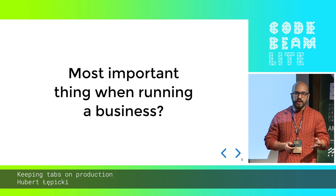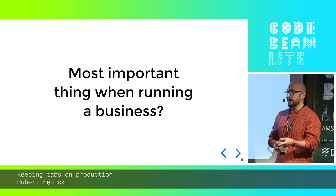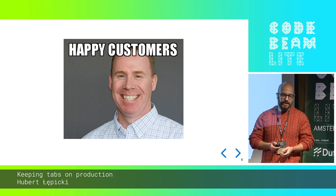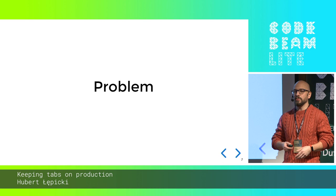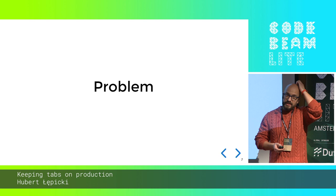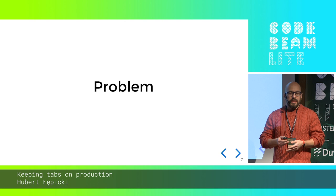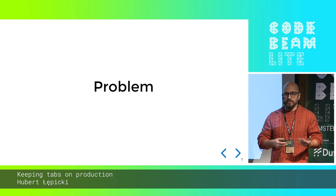Let me start with a question: what's the most important thing when running a business? Making money. And how do you make money? You have happy customers — somebody willing to pay you. So how do you keep customers happy? You solve problems for them. And how do we solve problems? We build software. Unfortunately, sometimes the problems our customers experience are caused by the software malfunctioning — something crashing. Instead of making our customers happy, we made them sad. And we don't want that, because money.